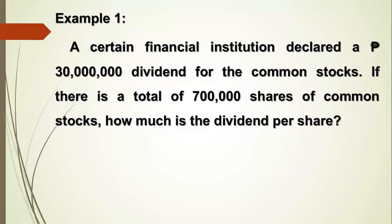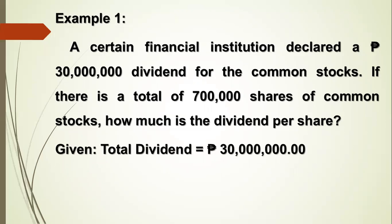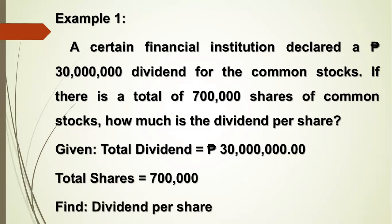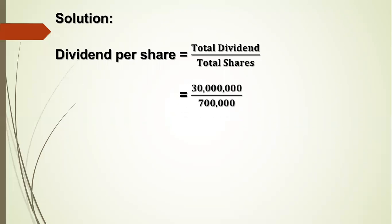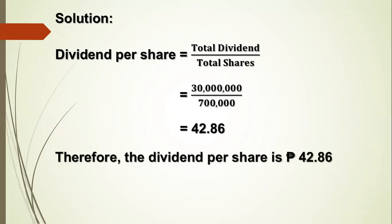Example 1. A certain financial institution declared a 30 million peso dividend for the common stocks. If there is a total of 700,000 shares of common stocks, how much is the dividend per share? Given: total dividend is 30 million pesos, total shares is 700,000. Dividend per share is equal to total dividend divided by total shares: 30,000,000 divided by 700,000 equals 42.86. Therefore, the dividend per share is 42 pesos and 86 centavos.